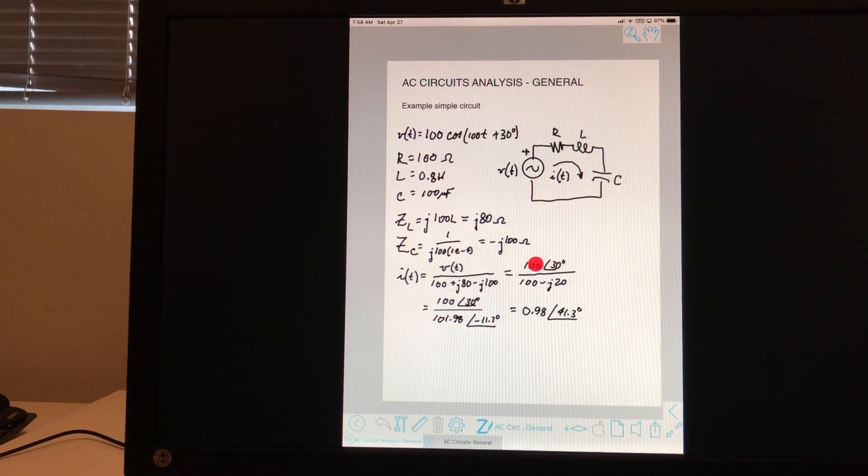Where you have a polar representation in one part of a fraction and the rectangular representation in another part of the fraction. And you have to actually do that calculation.